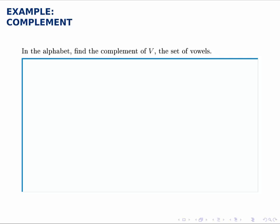In the alphabet, find the complement of V, the set of vowels. So here our universe is the alphabet, so we can call that U. V is the vowels, which of course is the set A, E, I, O, and U.